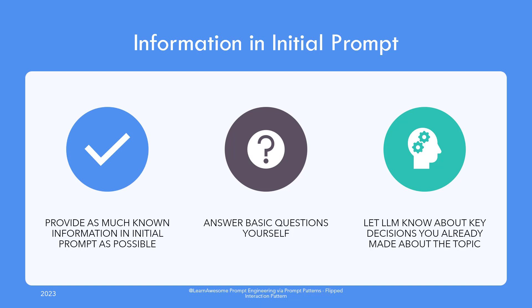Another way to limit questioning is to inject as much known information in advance as possible. So if you are asking it to make a diet plan and you are vegan, let it know in advance rather than waiting for it to ask you whether you avoid certain types of food. The same goes for dietary restrictions and any health issues you may have. While the intent of the pattern is to avoid being in the driving seat, avoiding obvious questions can lead to better utilization of the pattern — you want to avoid being in the driving seat only for questions related to information you don't have about the topic.